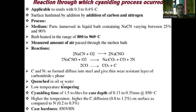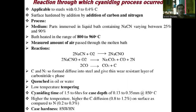The next step is quenching in oil or water, with oil or water used as the quenching medium. Then low-temperature tempering is carried out. Cyaniding time is 1.5 to 6 hours for a case depth of 0.13 to 0.35 mm at 850 degrees Celsius. Higher temperature gives higher carbon diffusion — 0.8 to 1.2% carbon on the surface compared to 0.2 to 0.3% nitrogen. The case hardness achieved is 850 VHN (Vickers Hardness Number).